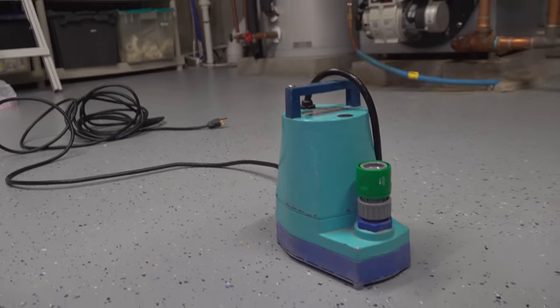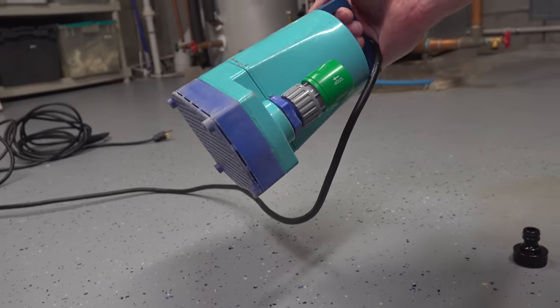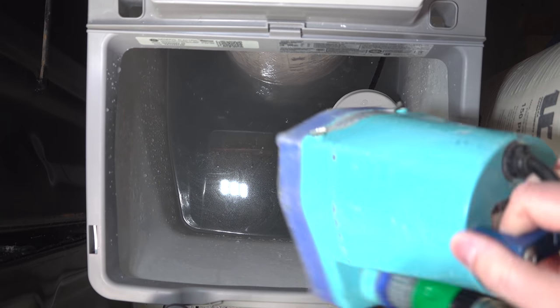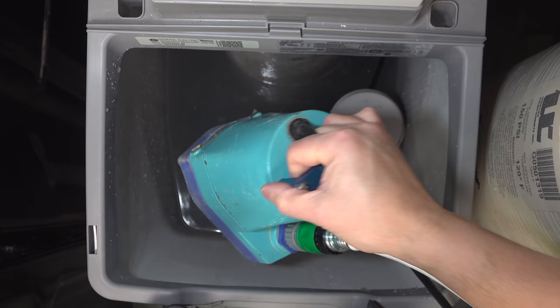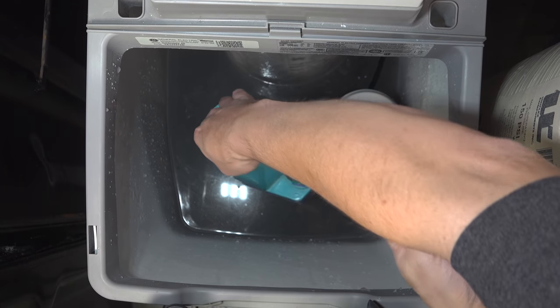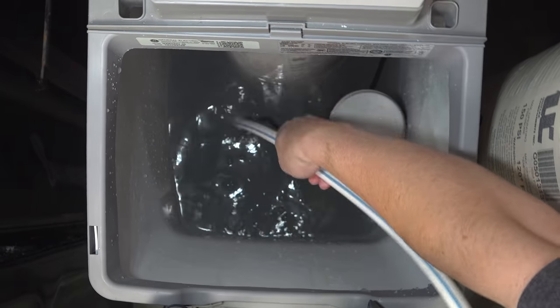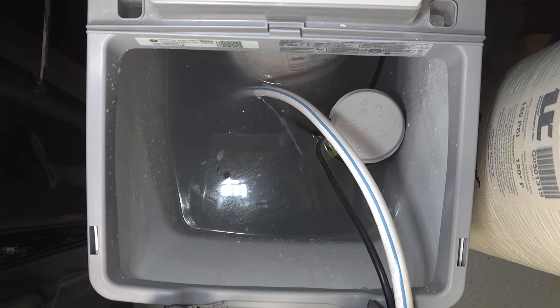Now we're going to get that salty water out of the tank. Using a submersible pump like this is the quickest and easiest way to do the job. You can just attach your garden hose to it and lower it right into the tank. Now remember when you're pumping this water out, it's really salty water, so don't pump it around any kind of trees or your plants because that could cause damage.